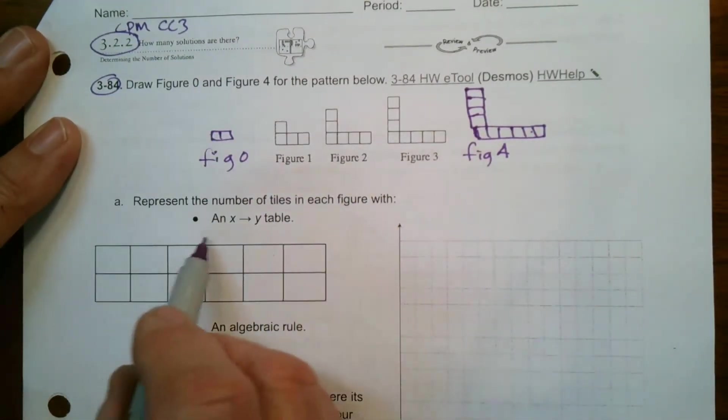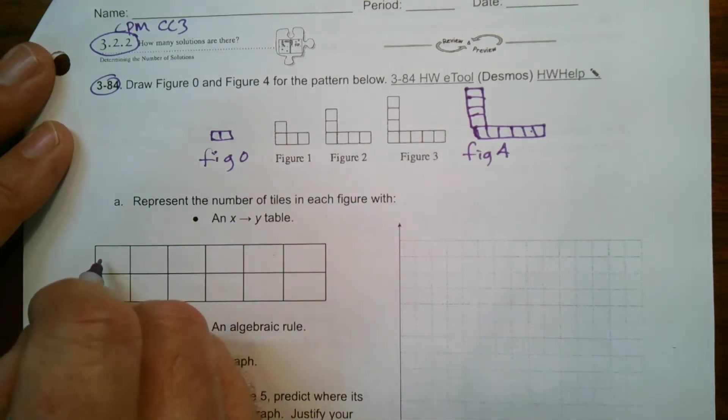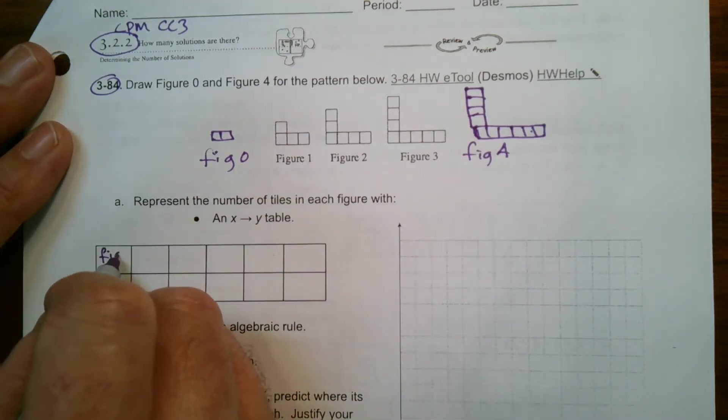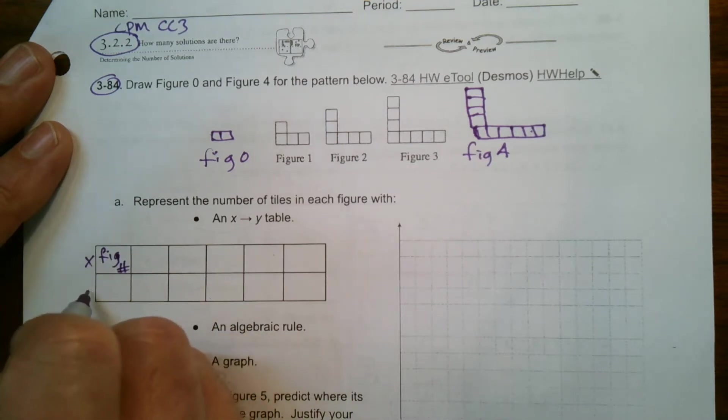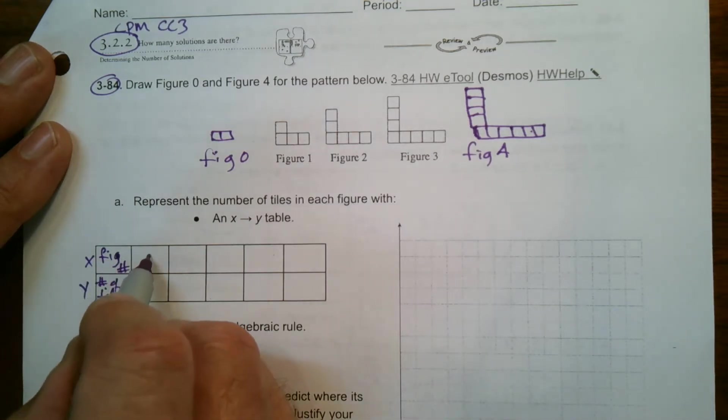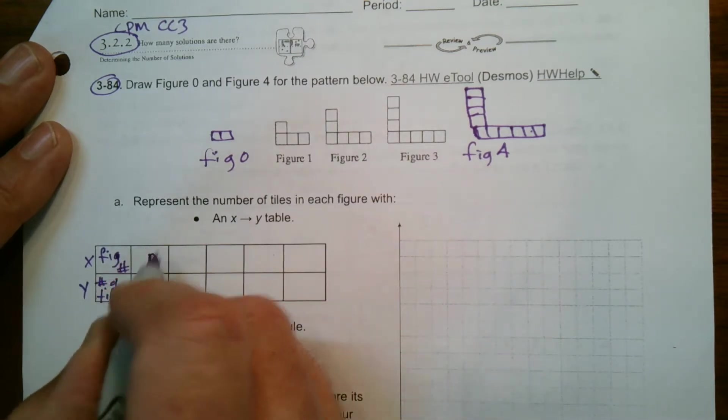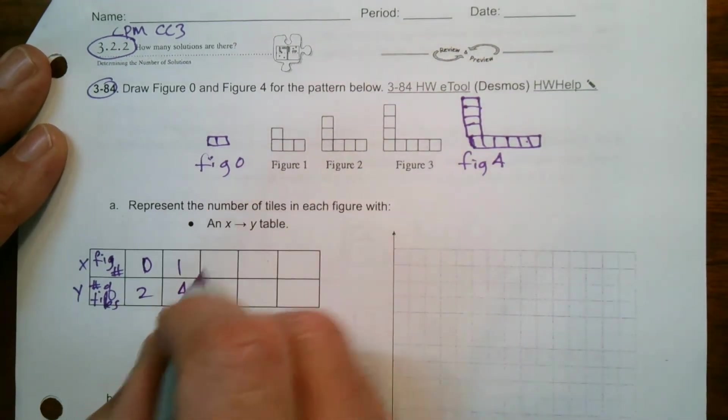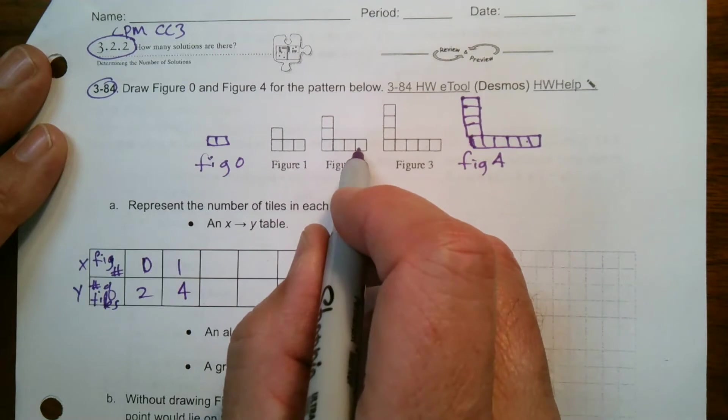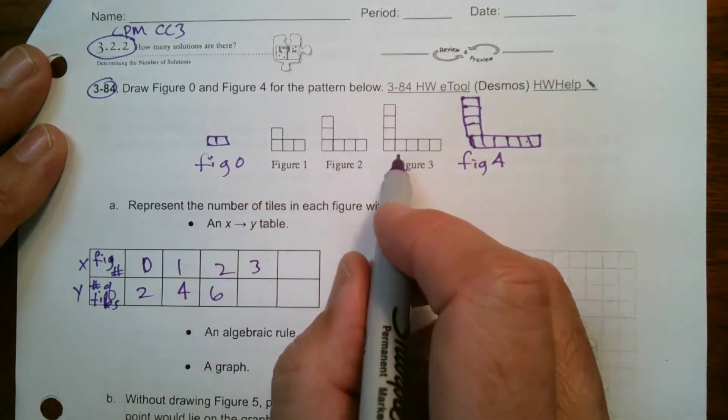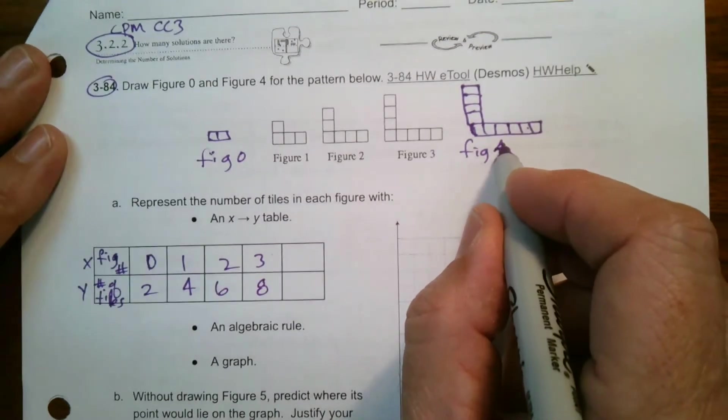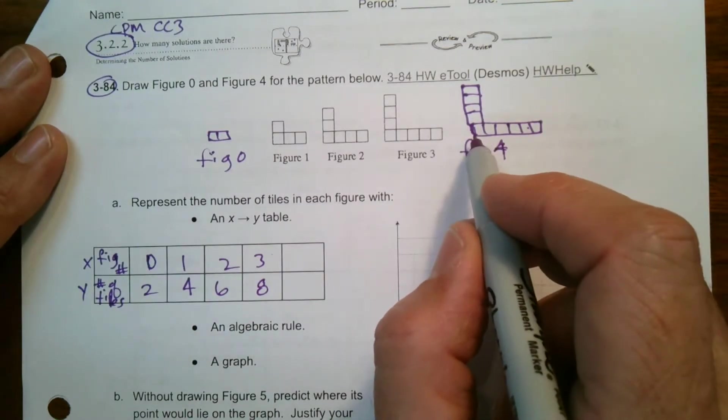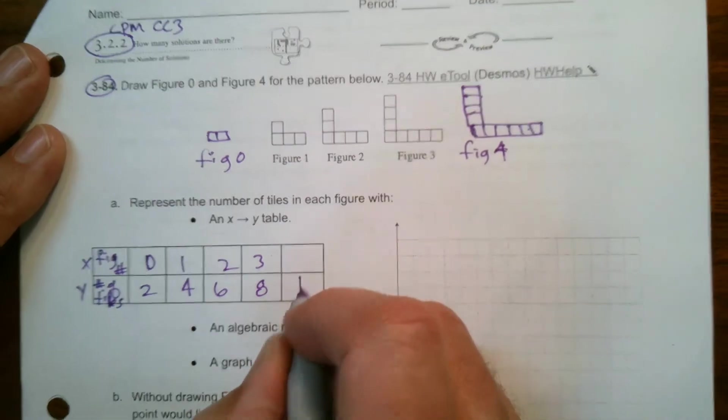So it wants me to represent the number of tiles in an x-y table. What does that mean? So this is, usually your figure number is your x, okay, your x value, and then your y value is the number of tiles. So figure number one, actually we'll start with zero. I have zero, figure number zero has two tiles. Figure number one has four. Figure number two has six. Figure number three has eight. Figure number four, right, if we count all those, there's six down there, four up there, that's ten.